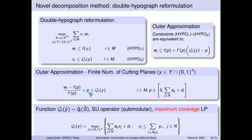Putting this all together, we have three formulations. The maximum coverage LP for Q_i(y) is actually a linear program (not an ILP) because the integrality constraints can be relaxed without loss of generality, and the optimal solution can be found by inspection even for fractional y. The vector x in the space of items is determined by whether item j is covered if at least one meta-item from its neighborhood is activated, giving the weighted coverage value.